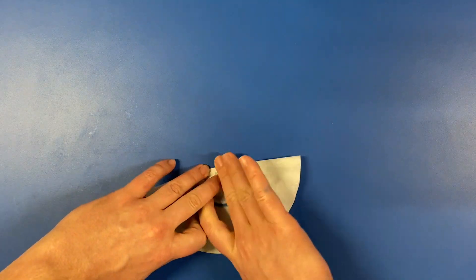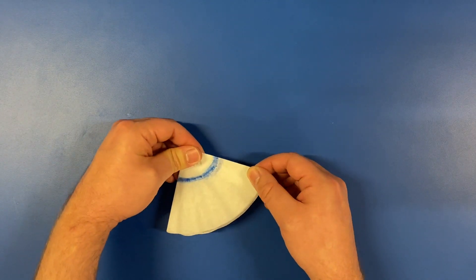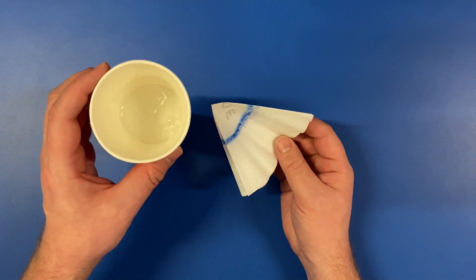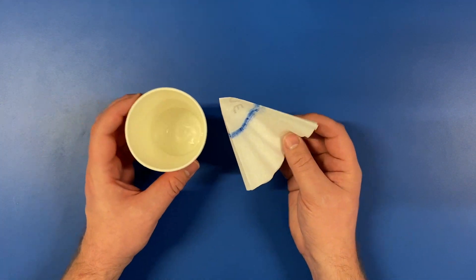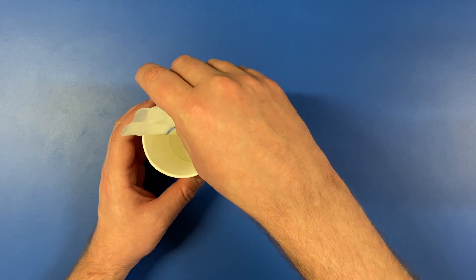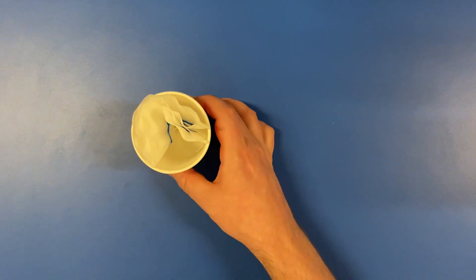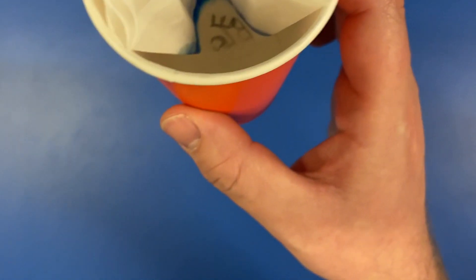Next, fold it in half, then in half again. Place this with the tip down in a cup filled with a tiny amount of water. The water will travel up the coffee filter and make the ink bleed. As the ink spreads, it should reveal the different pigments that are used to color the ink.